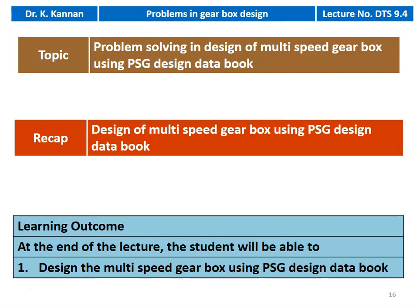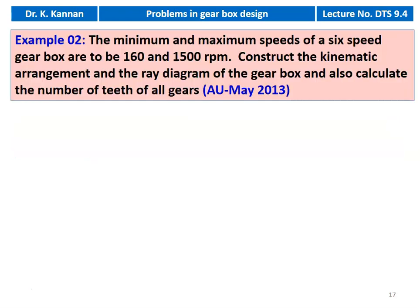We are going to design the multi-speed gearbox with six different speeds. In the earlier two lectures, we discussed the design procedure for multi-speed gearbox and solved one problem in the six-speed gearbox design. In this lecture also, we solve one problem on the six-speed gearbox using the PSG Design Data Book — example number 2 from the May 2013 question paper. The minimum and maximum speeds of a six-speed gearbox are to be 160 and 1500 RPM. Construct the kinematic arrangement and the ray diagram, and also calculate the number of teeth of all gears.